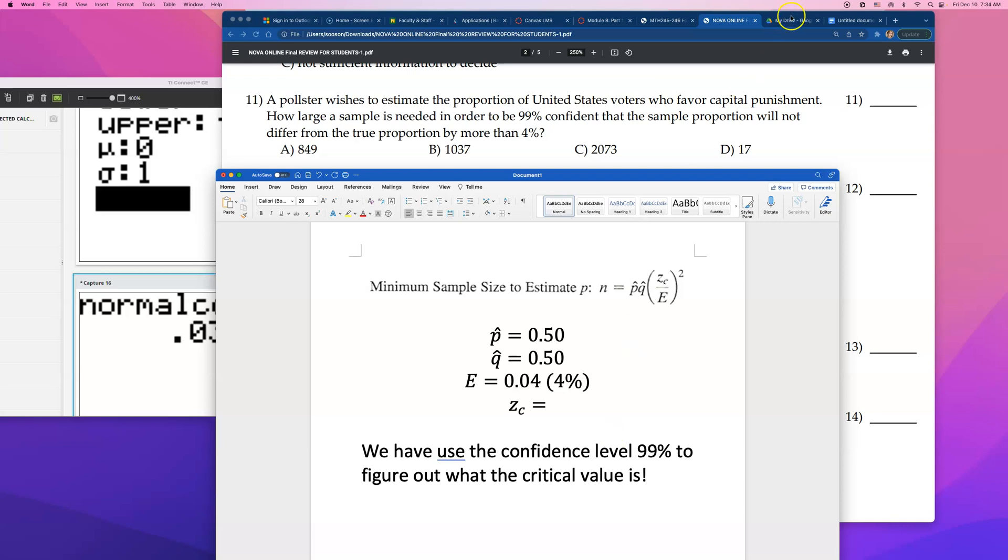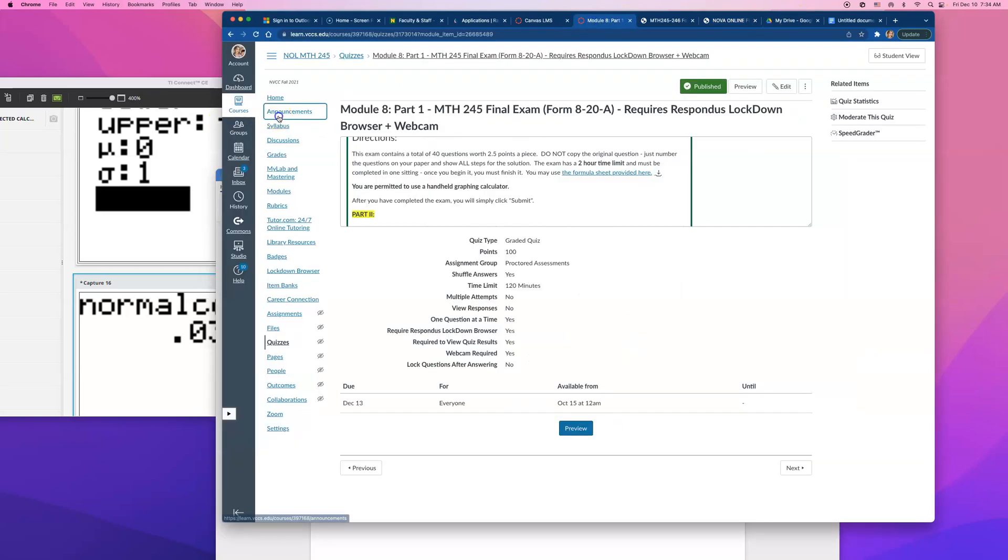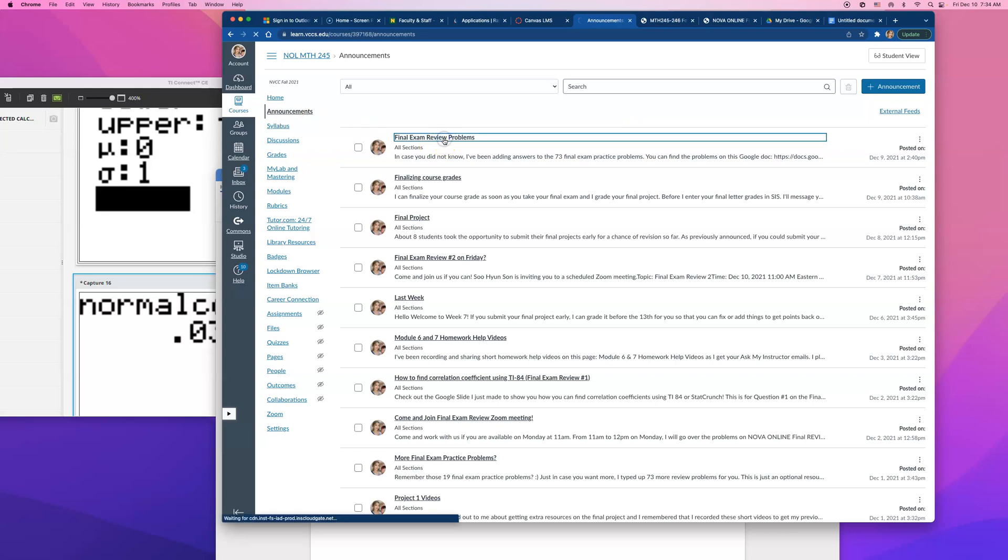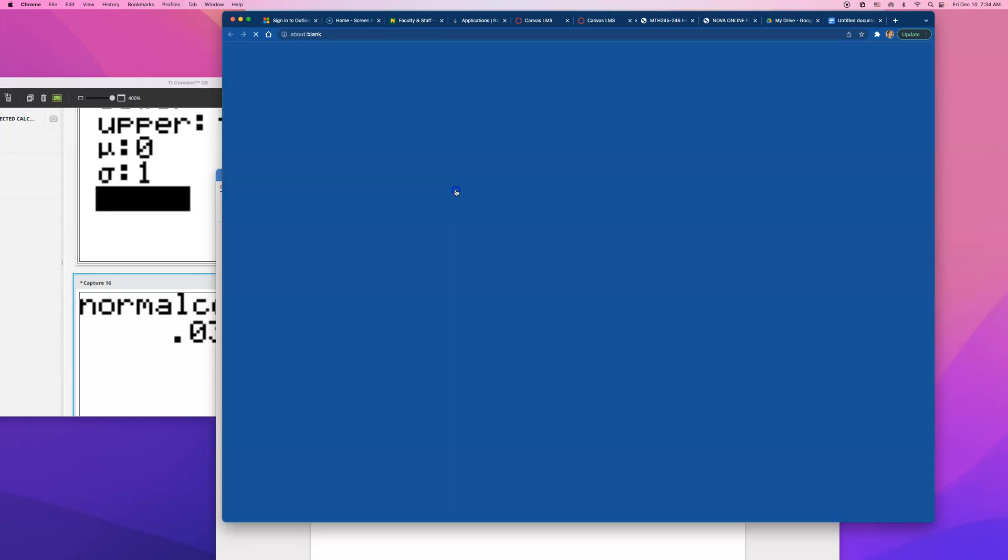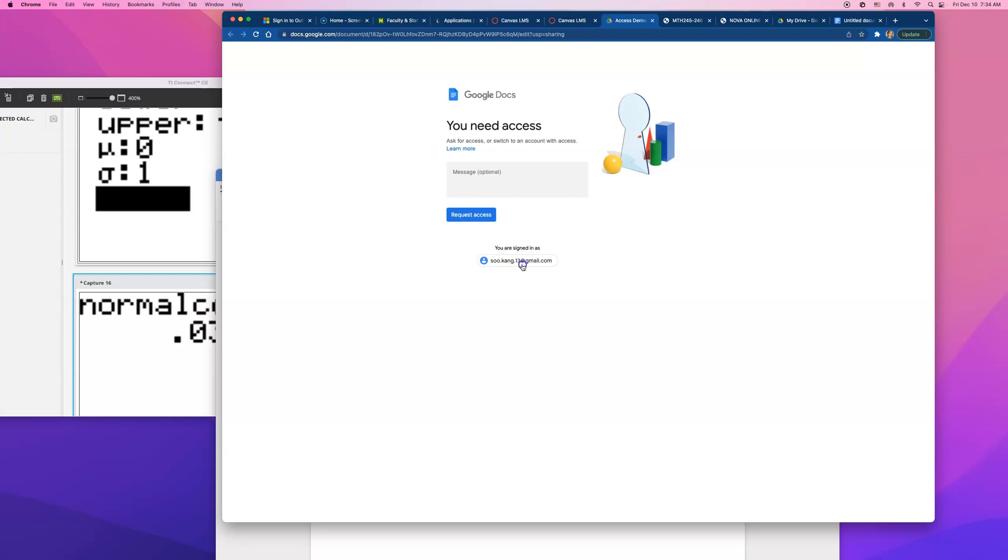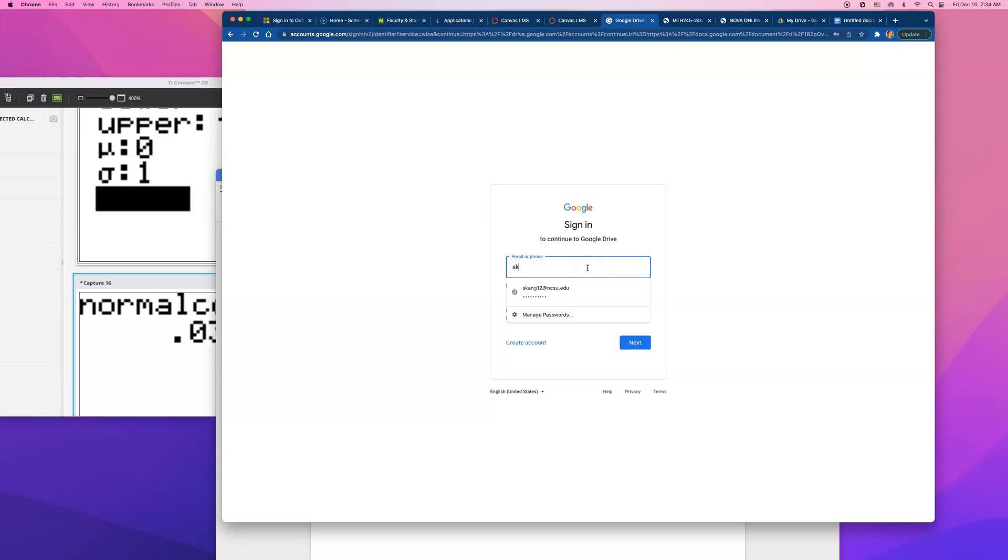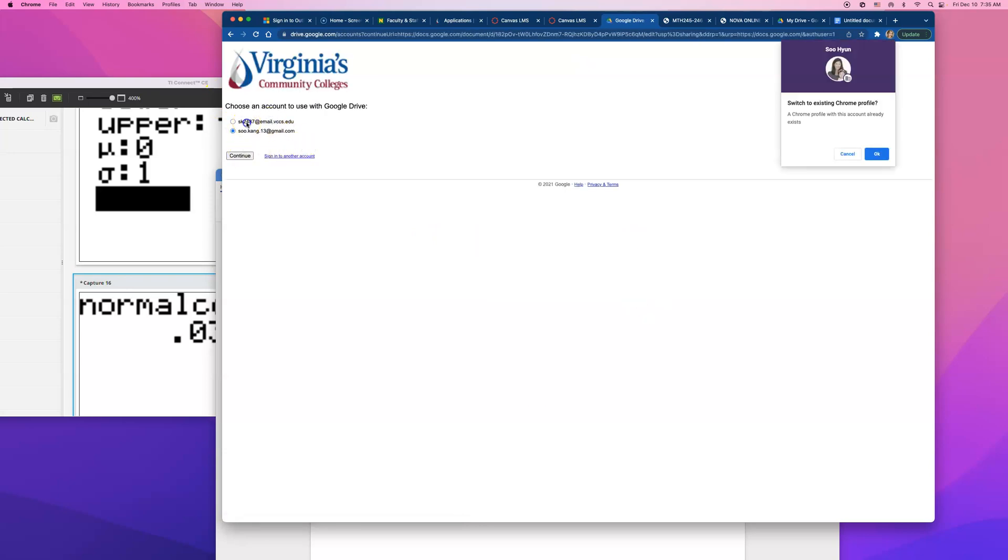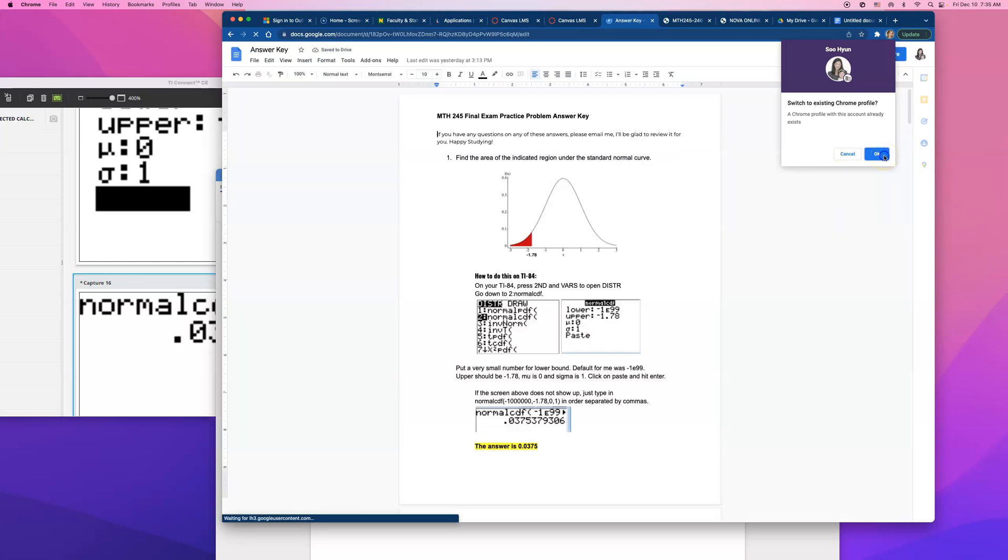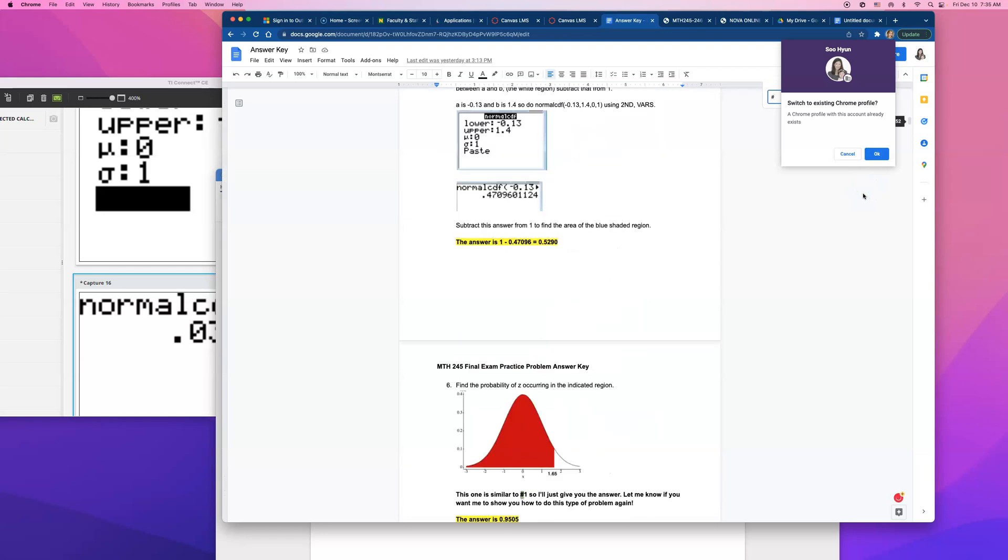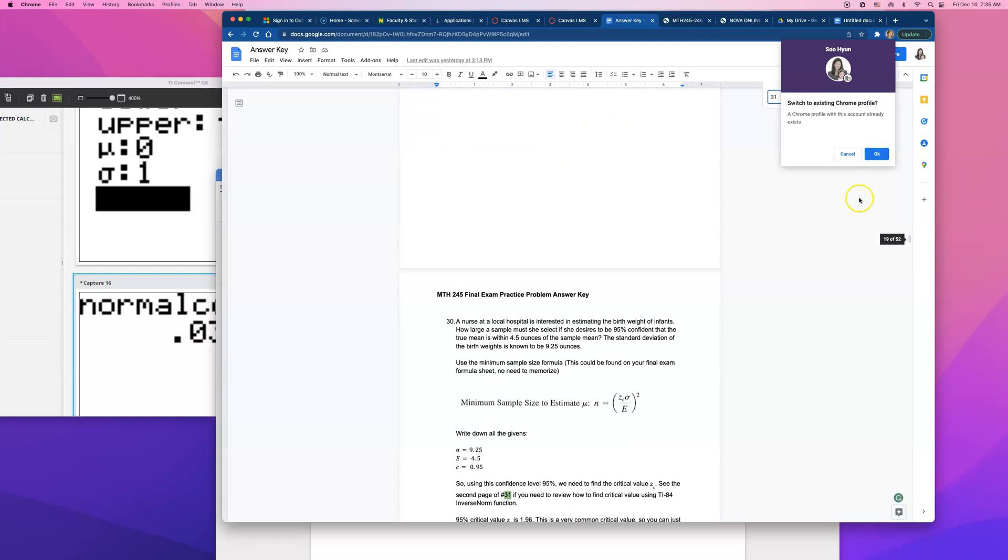On the other document that I typed up for you guys, remember, because there were two different final exam review documents, right? And on this document, now, hold on, I need to log in with my Nova ID. One second.